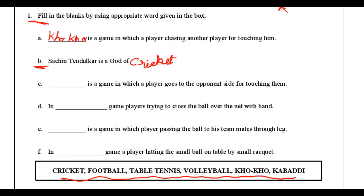The third one: blank is a game in which a player goes to the opponent's side for touching him. Out of cricket, football, table tennis, volleyball, kho-kho, and kabaddi, the answer will be kabaddi — in this game the player goes to the opponent's side to touch the other player.